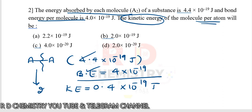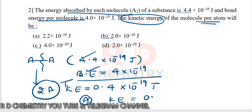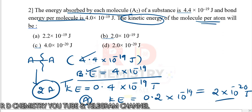After dissociation we get two A atoms. Total kinetic energy for the two atoms is 0.4 × 10⁻¹⁹ joules. Per atom, kinetic energy is half of that: 0.2 × 10⁻¹⁹ = 2 × 10⁻²⁰ joules. So the answer is option number D.